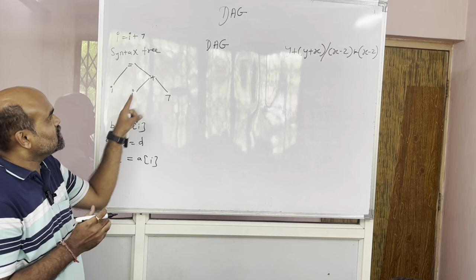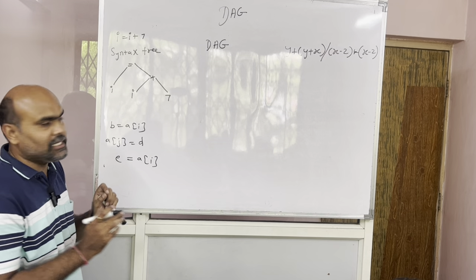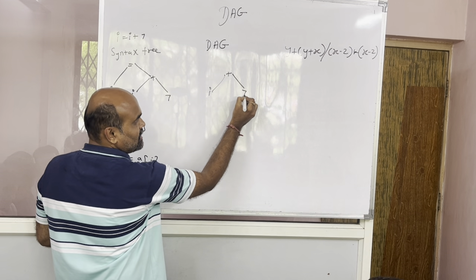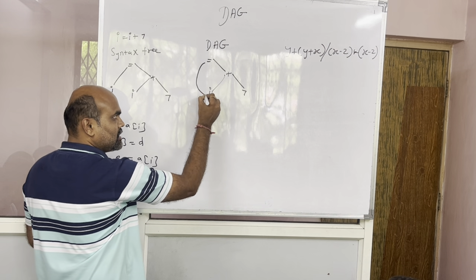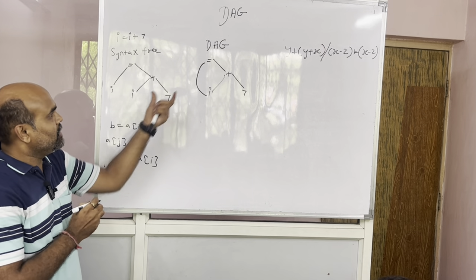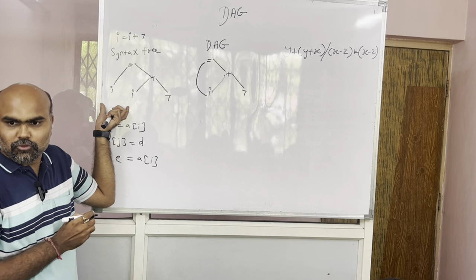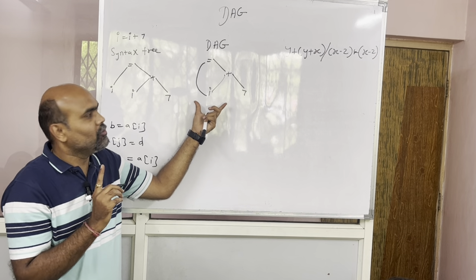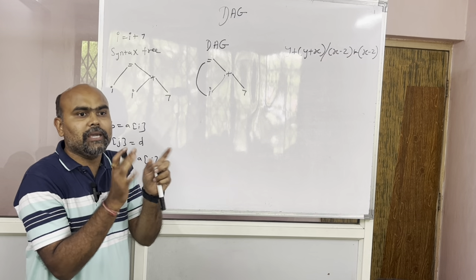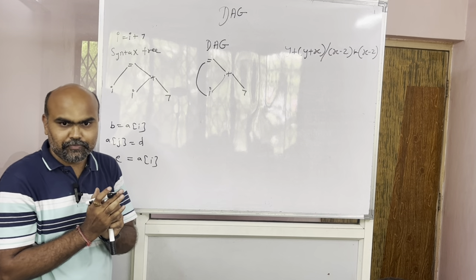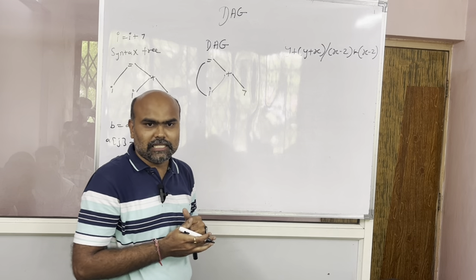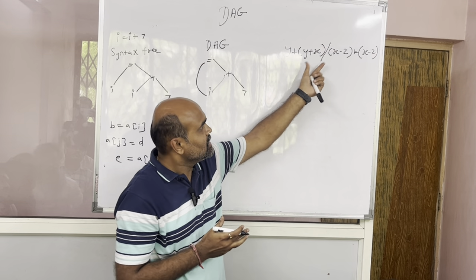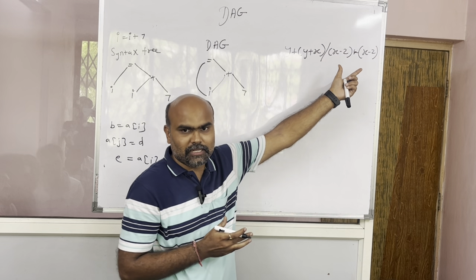So for i equals to i plus 7, hum iska DAG kaise nikalenge. If I write here, i plus 7 is equals to, here I connect again i. Aap dekho ge, yaha pe i haemara do baar aaya hua tha, lekin DAG mein only one time aaya hua hai.